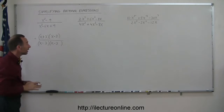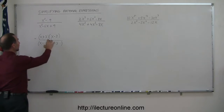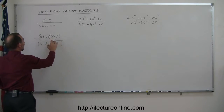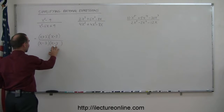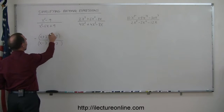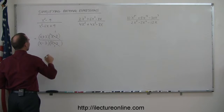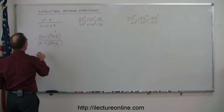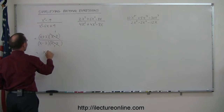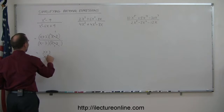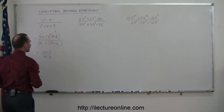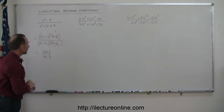Now we can see that in the numerator I have an (x - 3), and in the denominator I have an (x - 3), so I can cancel those out. That cancels to 1 and 1. And so this can be written as (x + 3) divided by (x - 3).